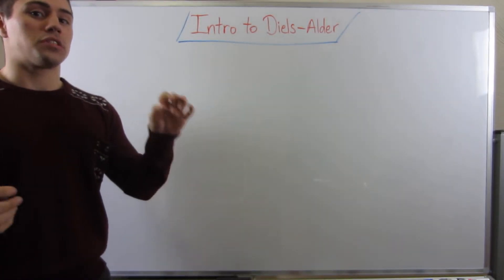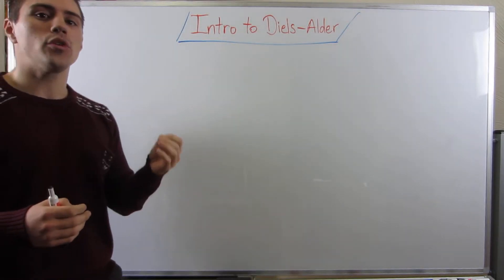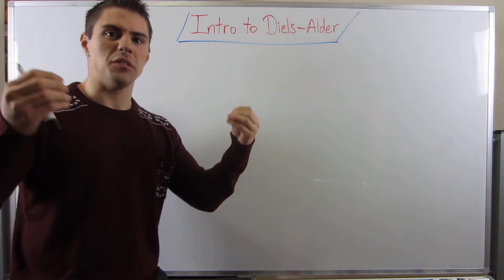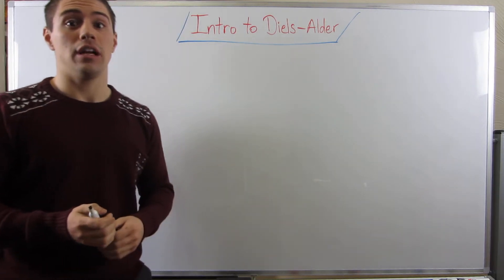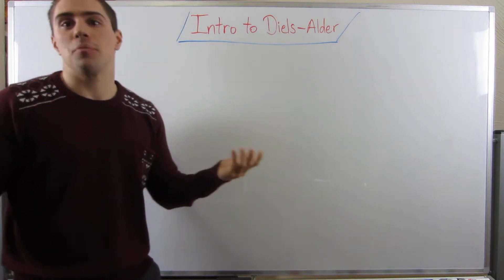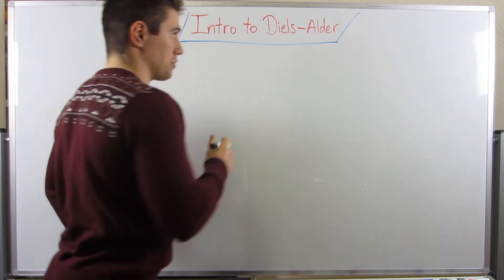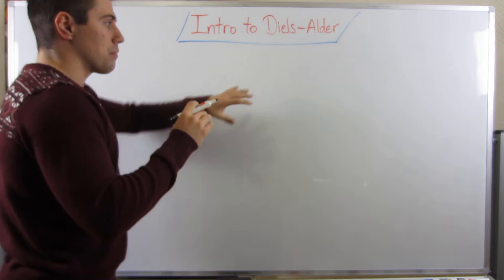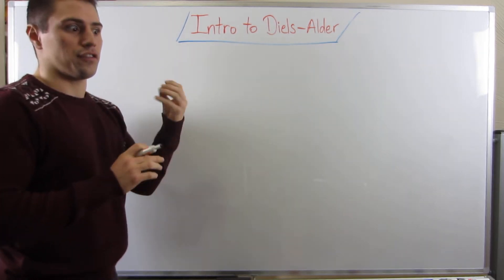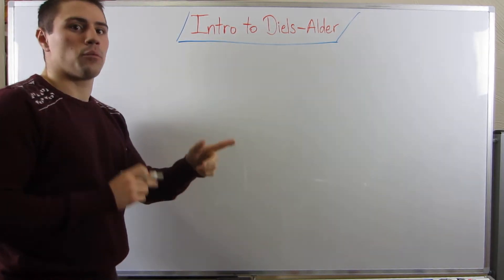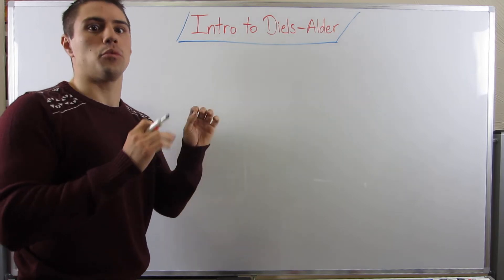Okay, gang. So today, in this video, we're going to tackle the first really big reaction that we're going to cover in OCHEM 2. And it's just a big reaction in general. So it's called the Diels-Alder reaction. So let me just kind of throw it up on here. We'll kind of look at it, dissect it, and then we'll kind of build off of it, and I'll tell you where we're going to go with it.